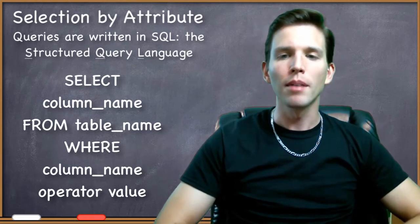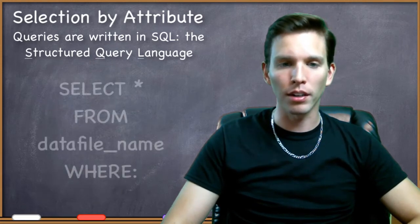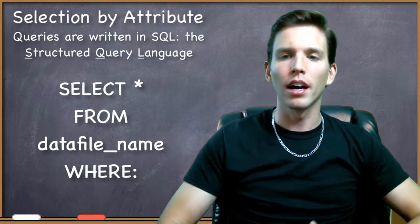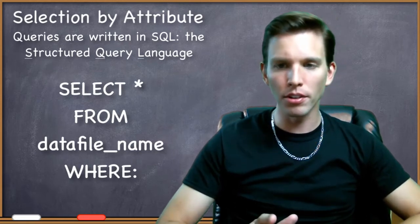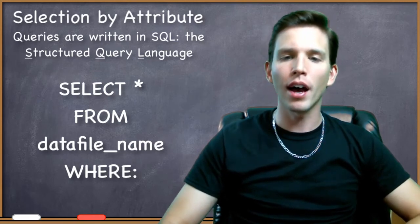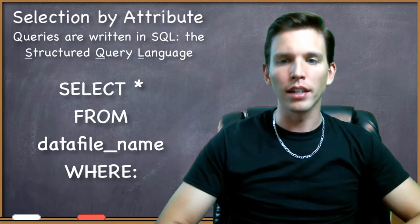SELECT asterisk FROM data_file_name WHERE, and then you type in your query with its operator. For instance, if I wanted to query a file of all the states in the United States based on their names and I wanted only the state—in this case there would just be one—named Illinois.